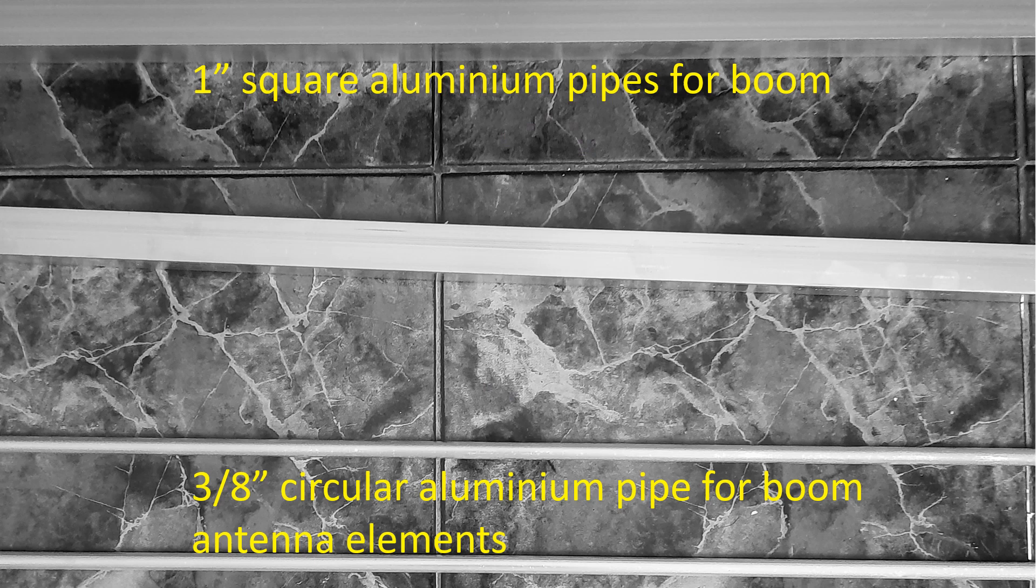I have bought 3/8 inch round aluminium pipes for the elements of the antenna and 1 inch square aluminium pipe for the antenna boom which are available at very low cost locally thanks to the flourishing aluminium fabrication industry over here. I had procured a spare HLF 200 cable of 10m length pre-crimped with PL259 connectors on both ends.